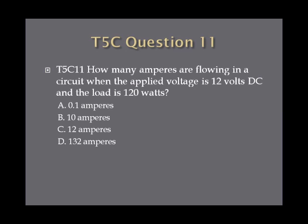Question eleven: How many amperes are flowing in a circuit when the applied voltage is 12 volts DC and the load is 120 watts? A. 0.1 amperes. B. 10 amperes. C. 12 amperes. Or D. 132 amperes.